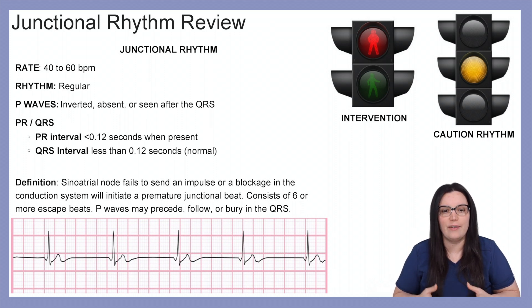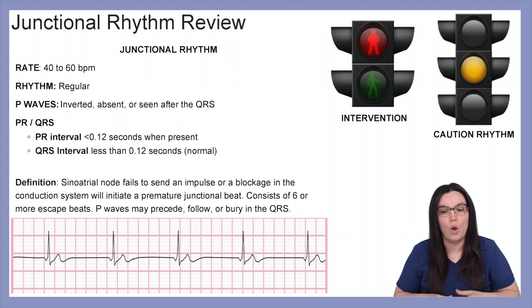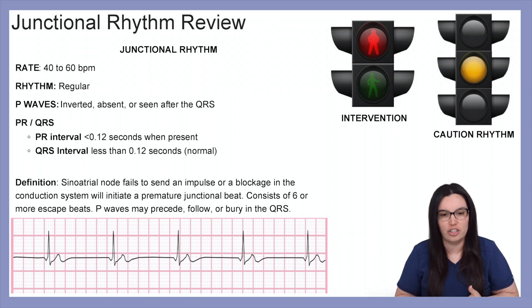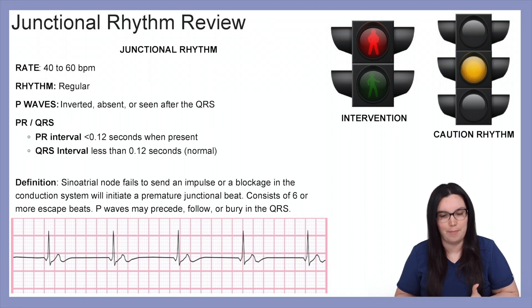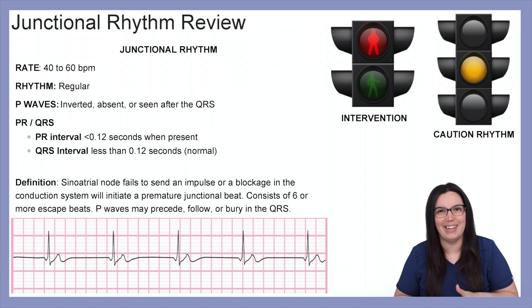The definition for this rhythm is the sinoatrial node fails to send an impulse, or a blockage in the conduction system will initiate a premature junctional beat. It consists of six or more escape beats, and P waves may precede, follow, or be buried in the QRS.